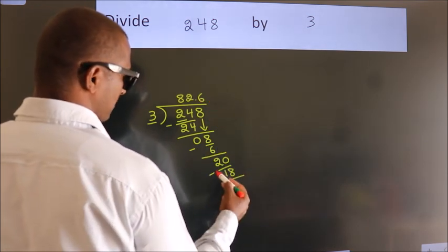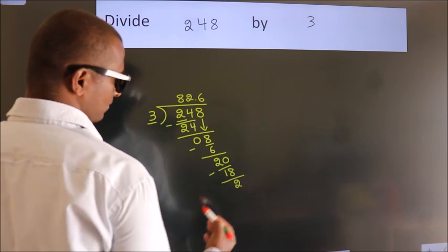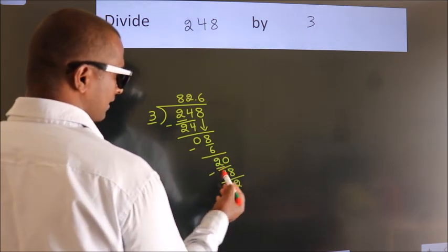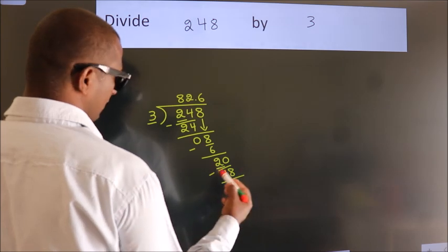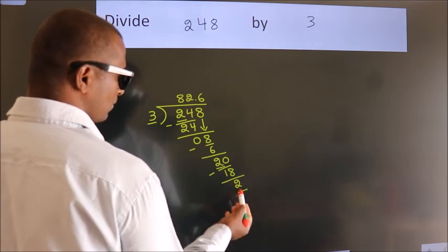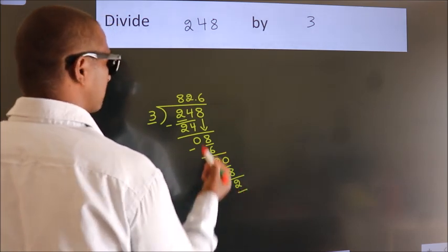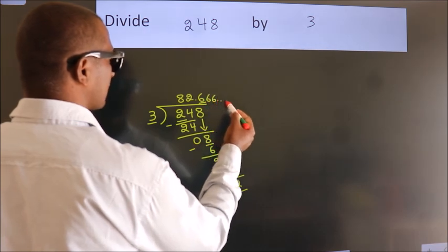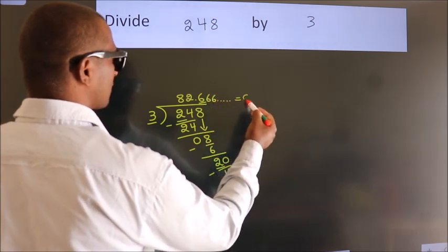Now we subtract. We get 2. Now you observe. We had 2 here and we got 2 again. That means this number keeps on repeating. So this is our quotient.